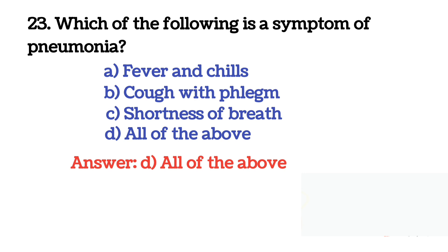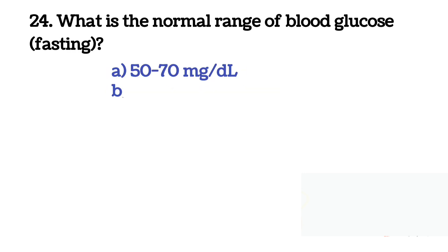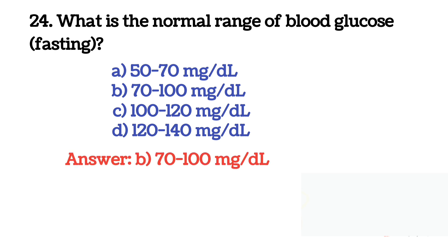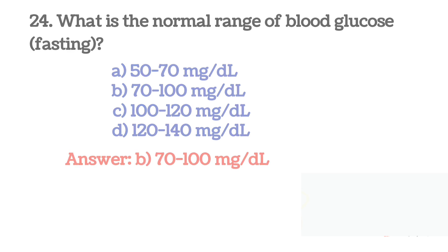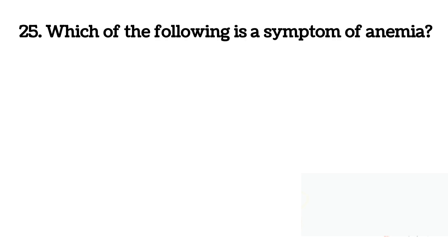Next question: What is the normal range of blood glucose fasting? The correct answer is B: 70 to 100 mg per dL.